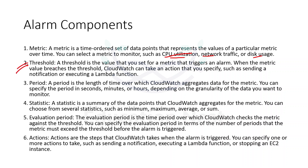The next component is threshold — the value we set for our metric that triggers an alarm. When the metric value breaches the threshold, CloudWatch can take an action you specified, such as sending a notification or executing a Lambda function. This works according to the configurations you have done.